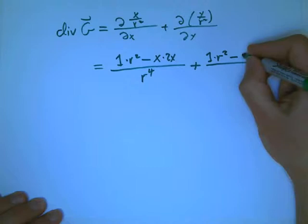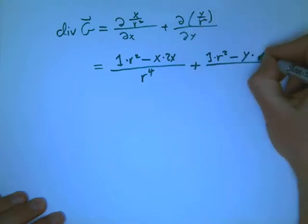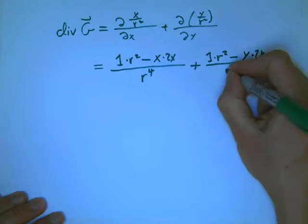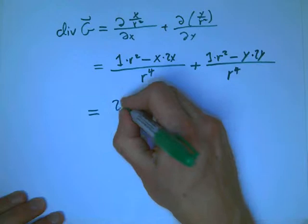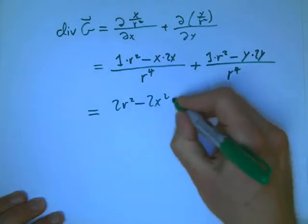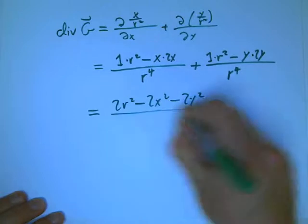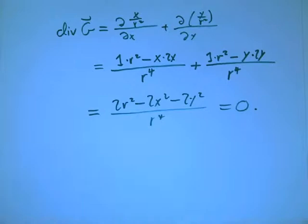1 times r², minus y left alone. r² is x² + y². Derivative of that with respect to y is 2y. And so, I get 2r² minus 2x², from here, minus 2y². Hey, that is zero.